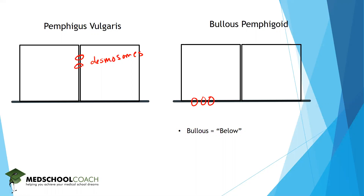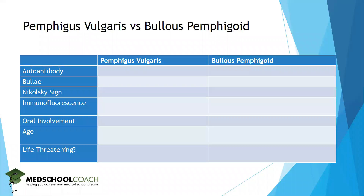Another useful mnemonic: hemidesmosomes — the root hemi means half — which means the symptoms are always half as bad as if the target were desmosomes. The antibody for pemphigus vulgaris is desmoglein, which is a part of the desmosome.